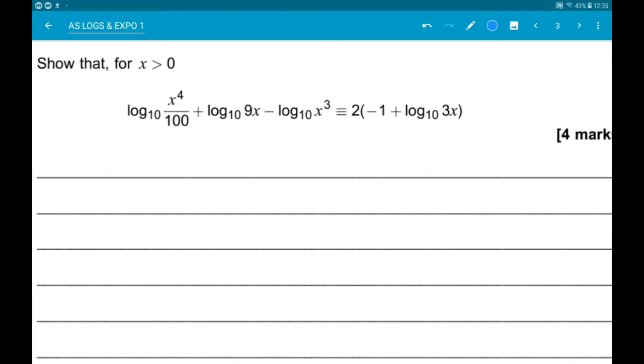Okay, number 2, a bit more tricky. So show that for x greater than 0: log base 10 of x to the 4 over 100, add log base 10 of 9x minus log base 10 of x cubed is identical to 2 times minus 1 add log base 10 of 3x.